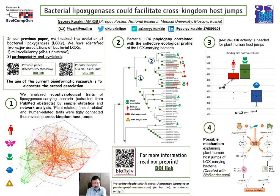Here you can see the full version of the network. Each node is a term and each edge is the co-occurrence of two terms in one bacterial species. This network is colored according to the ecophysiological group of each term.